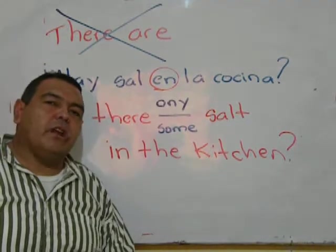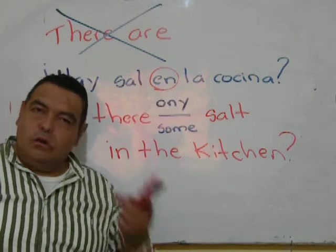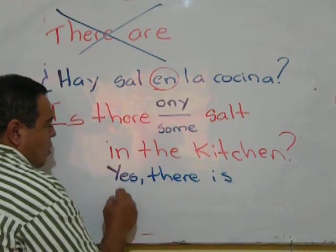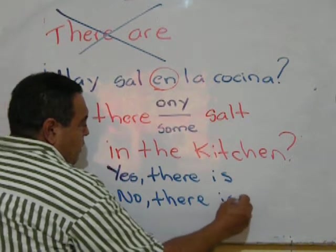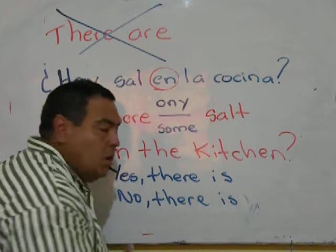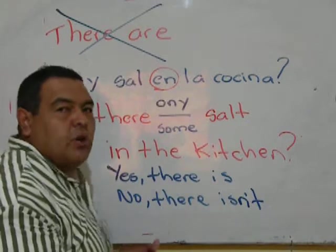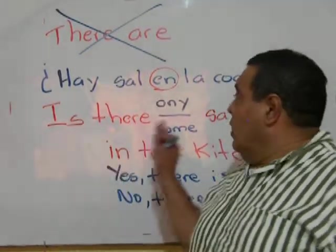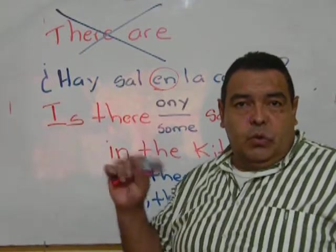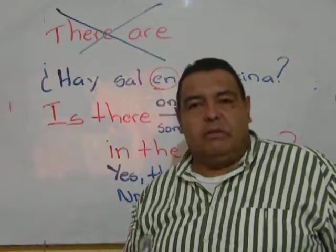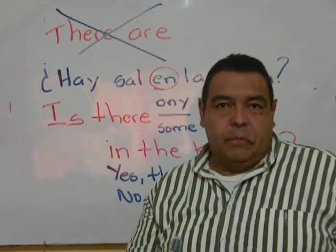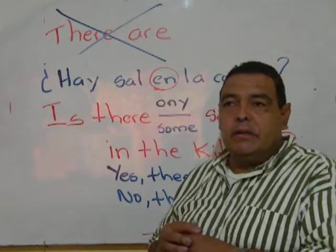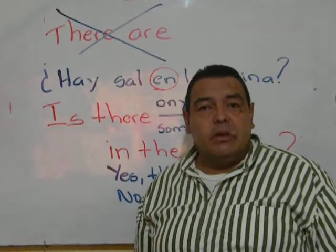Is there any salt in the kitchen? We can have only two answers. We can say yes, there is, or no, there isn't. I can say 'there is not,' but it is better to use the contraction: 'there isn't.' So kids, this is it for today. I am hoping you are understanding my lessons. These videos are done only for you. I am putting my best effort in them so you can understand in an easy way. Please keep up the good work. God bless you. Say hi to your parents.